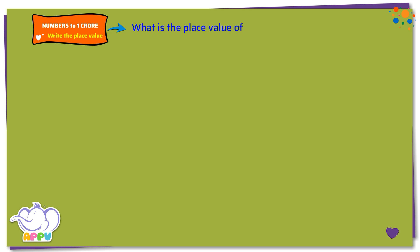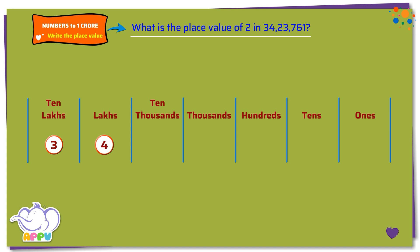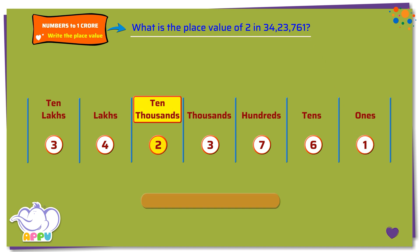Write the place value. What is the place value of 2 in 3,423,761? We can write 3,423,761 in a table of ten lakhs, lakhs, ten thousands, thousands, hundreds, tens, and ones. We can easily see 2 is in the ten thousands place.